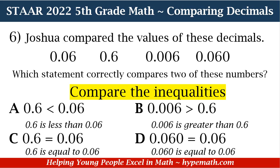Let's go to C: 0.6 is equal to 0.06. Again, we look at our place values. For the ones place, both numbers have a zero. Moving to the tenths place — if the numbers were equal, all the digits would be the same. But in the tenths place, 0.6 has a six, and 0.06 has a zero. So are those numbers equal to each other? A, B, and C all seem a little shaky.